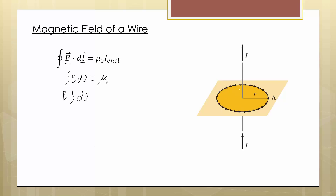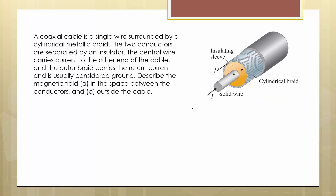This is easiest to grasp by seeing some examples. I'm not going to do a separate sample calculations video because most of the derivations I do to convey the concepts are also sample calculations. We can use Ampere's law to derive the expression we already know for the magnetic field around a wire. We want to choose our Amperian loop such that we have a high degree of symmetry.